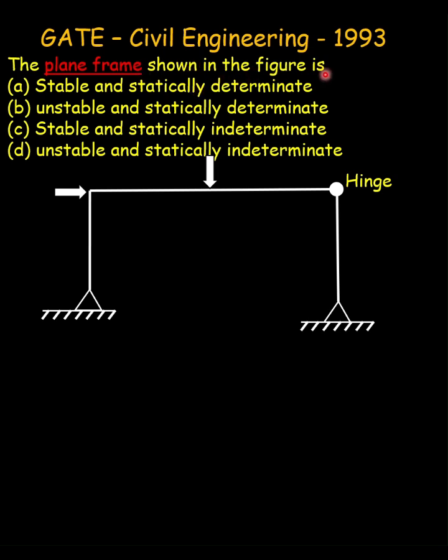Given in GATE Civil 1993, it is asked to identify whether the given plane frame is number one, stable or unstable, and number two, statically determinate or indeterminate. Now the general rule in determining the static indeterminacy is to find the number of unknown reactions minus the number of equilibrium equations.